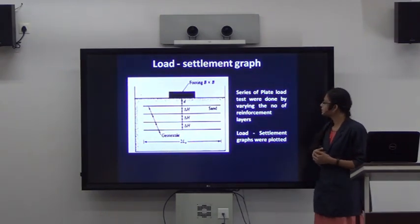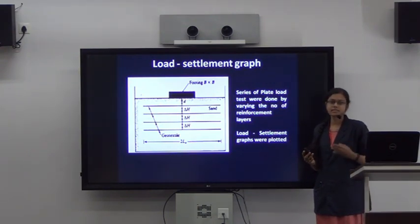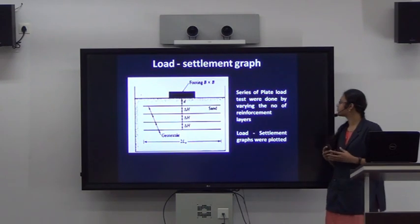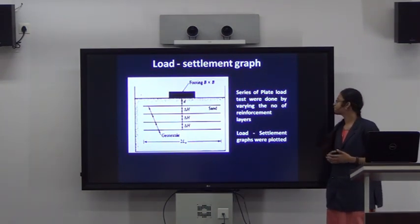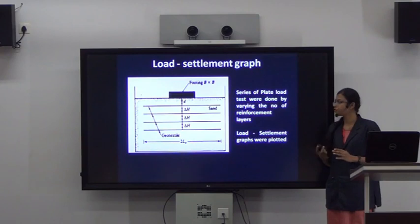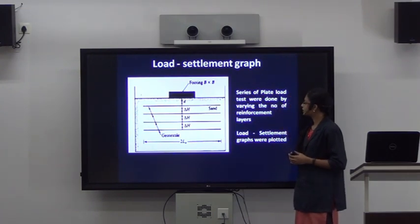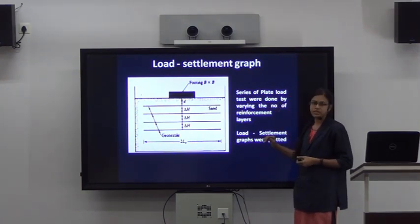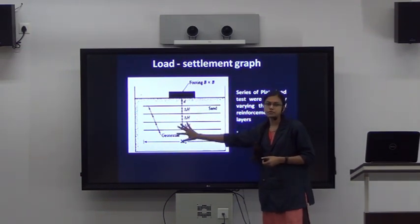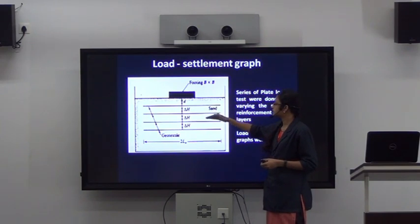To assess the bearing capacity improvement, we perform the plate load test — a series of tests varying the number of reinforcement layers. The first test is done with unreinforced soil, then one layer of reinforcement is placed and tested, then the number of layers is increased to n equals 2, n equals 3, and so on.